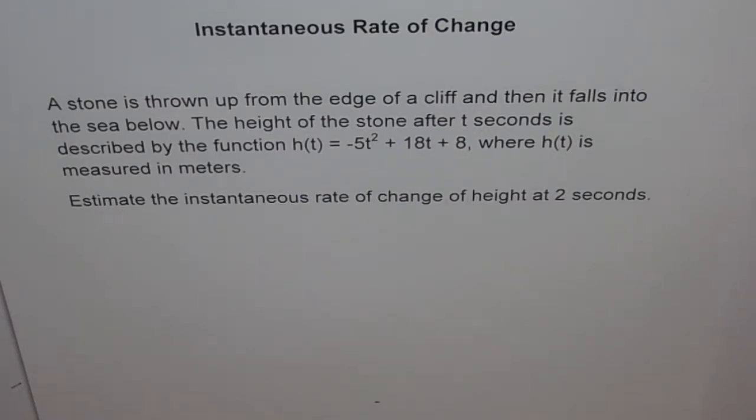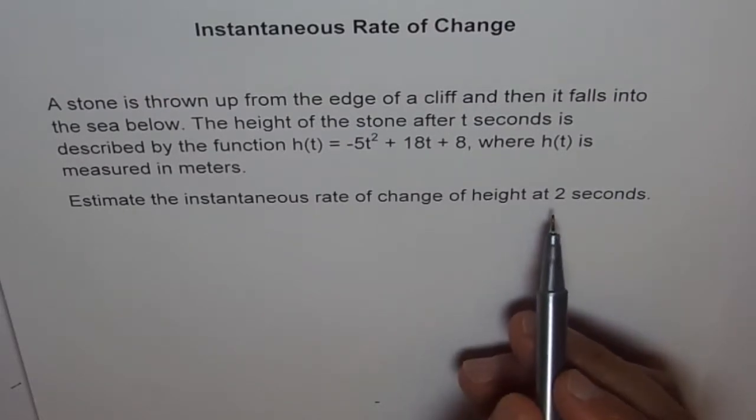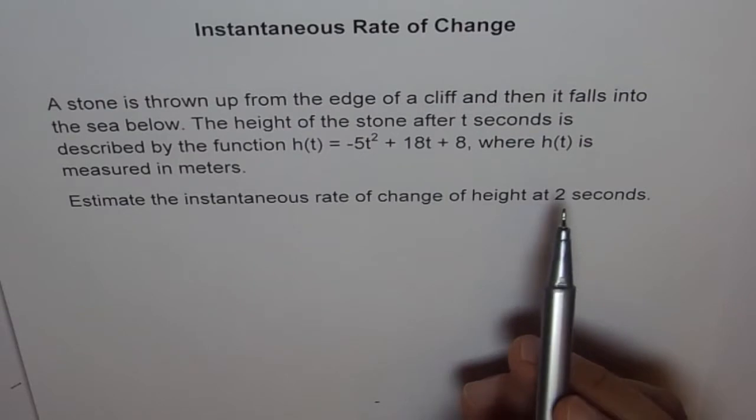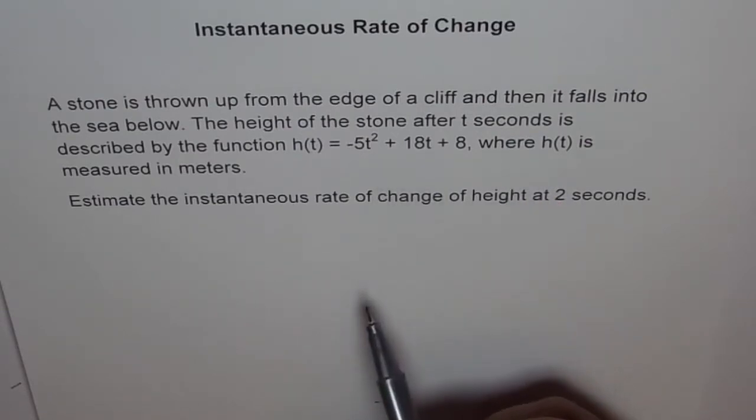Estimate the instantaneous rate of change of height at 2 seconds. Well, there are a couple of ways to do it. One way is that we could find a point 2 and a point very close to 2 and then their difference should give us instantaneous rate of change.